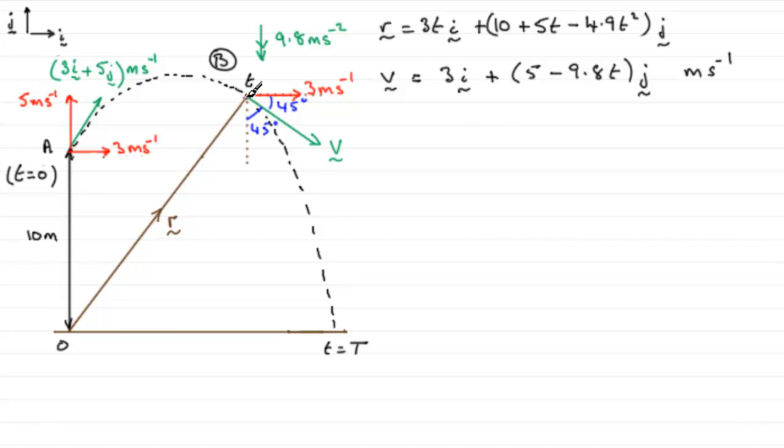We also know that it's moving with a velocity in this direction, given by 5 minus 9.8T. So I'll mark that in as 5 then minus 9.8T, and that will be measured also in meters per second.